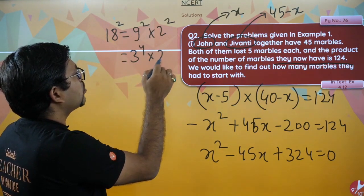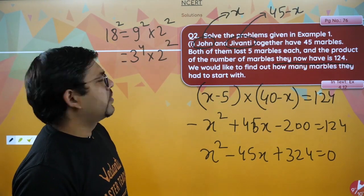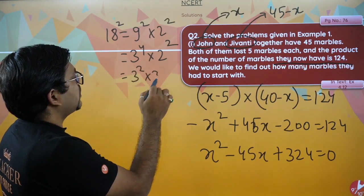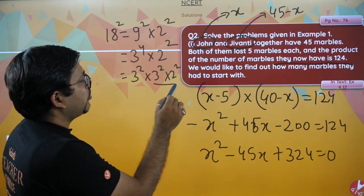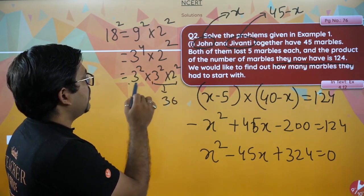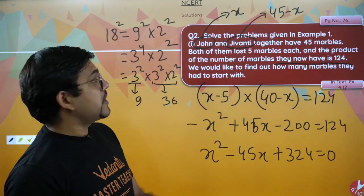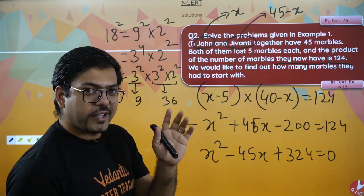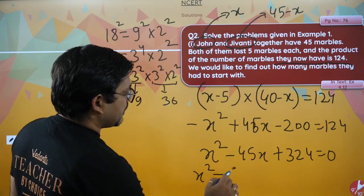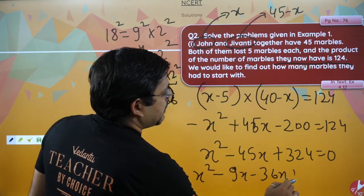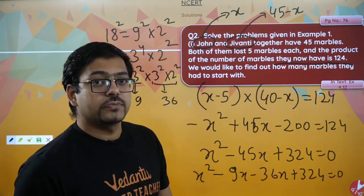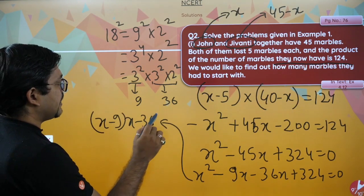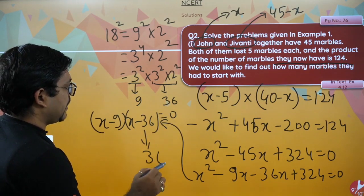Now factorize: 9 into 36 equals 324, and 9 plus 36 equals 45. So we get x squared minus 9x minus 36x plus 324 equals 0, which factorizes as x minus 9 into x minus 36 equals 0. So x equals 9 or x equals 36.